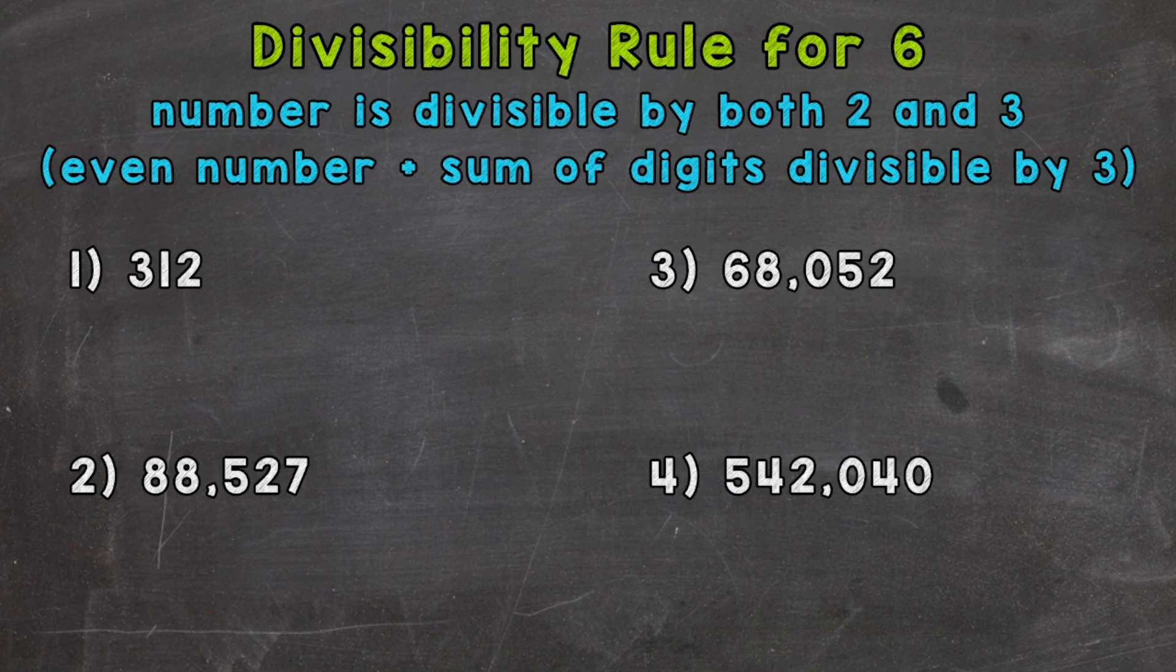So let's jump into number 1 where we have 312. So let's first check to see if this is divisible by 2. So if we have an even number, that means it's divisible by 2. So let's check our last digit here, and it's a 2.